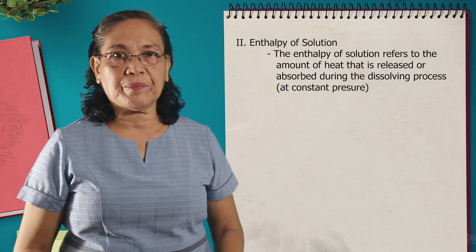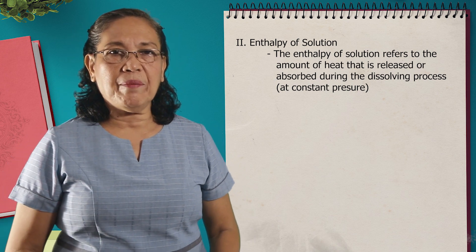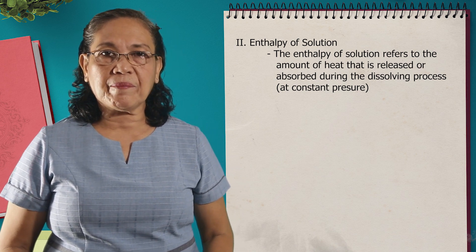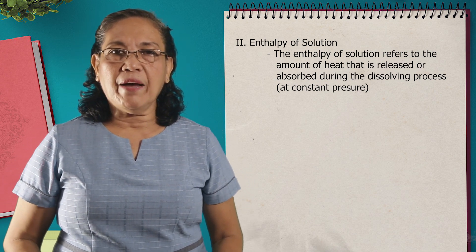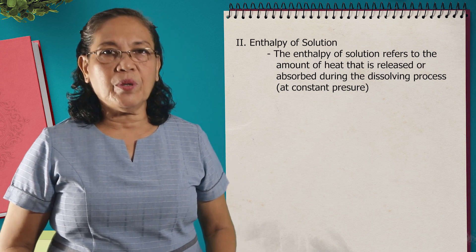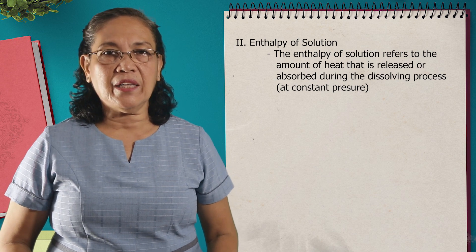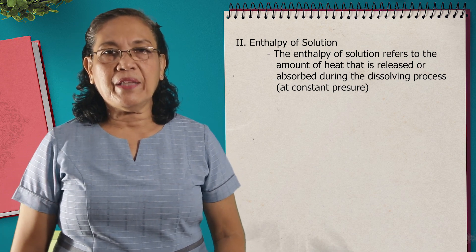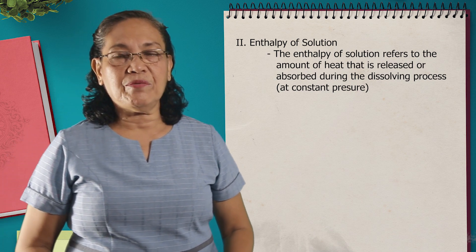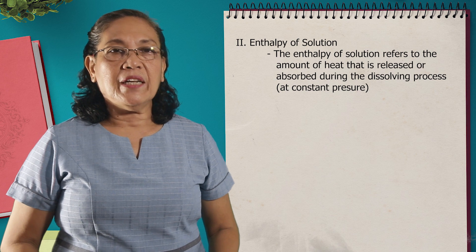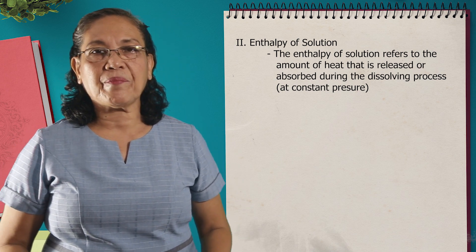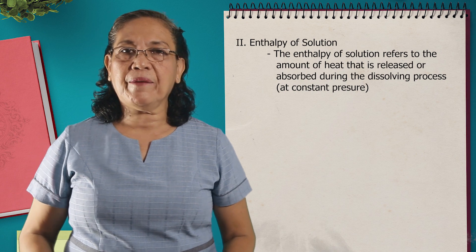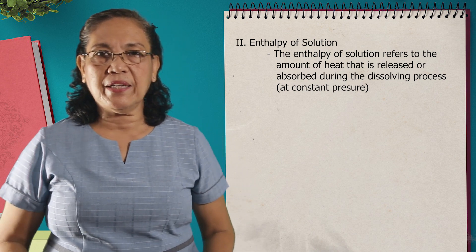Another topic I'm going to discuss today is about the enthalpy of solution. When we talk about enthalpy, this means heat — it implies heat. Now, the enthalpy of solution is the amount of heat that is released or absorbed during the process of making the solution at a constant pressure. To understand better what processes are involved, it is better to think of a hypothetical three-step process when a solute dissolves in a solvent. Let us consider the solute to be substance A, the solvent to be substance B, and our product, let's call it AB.